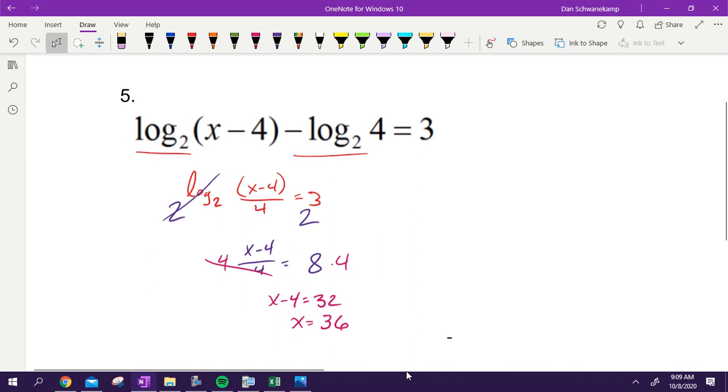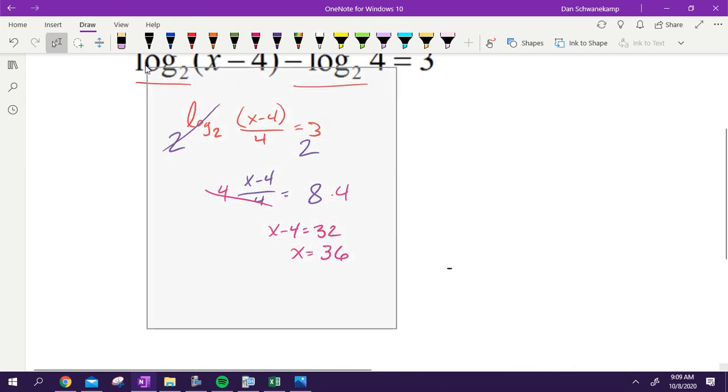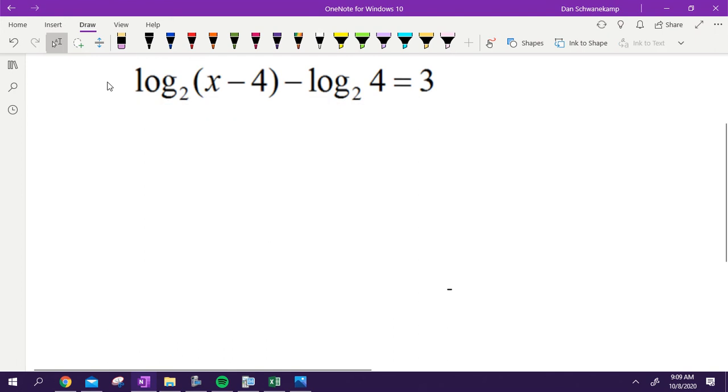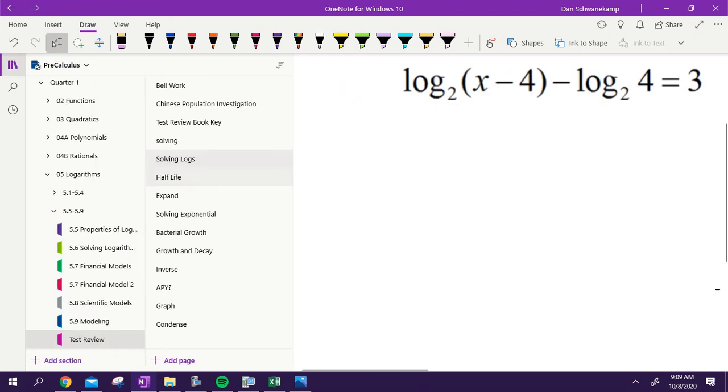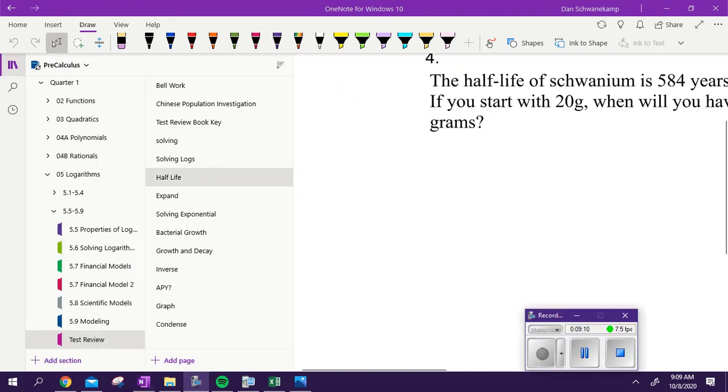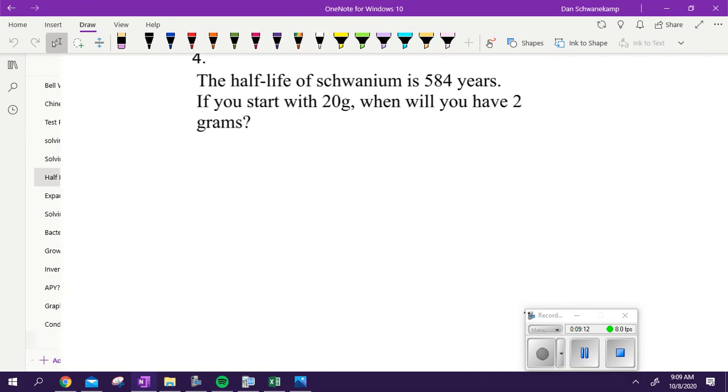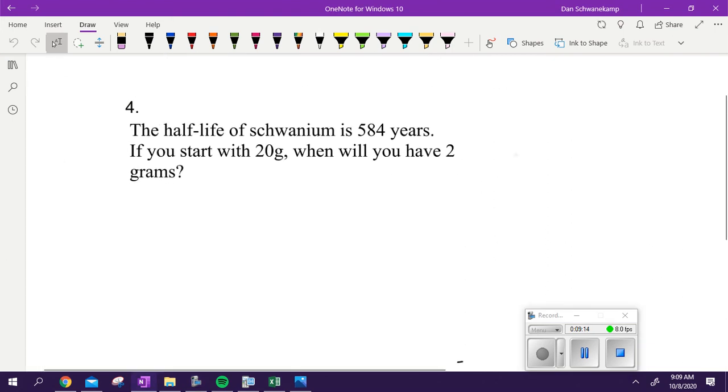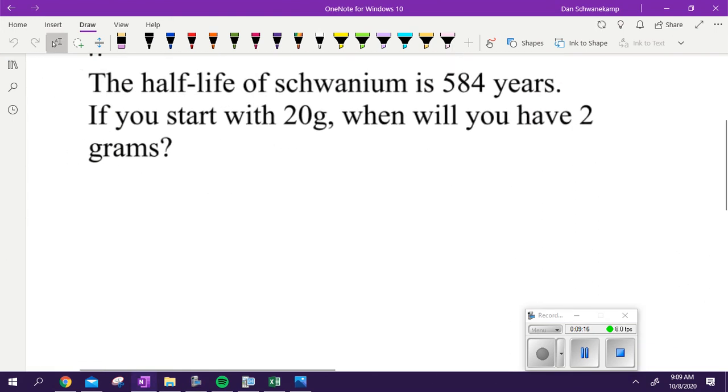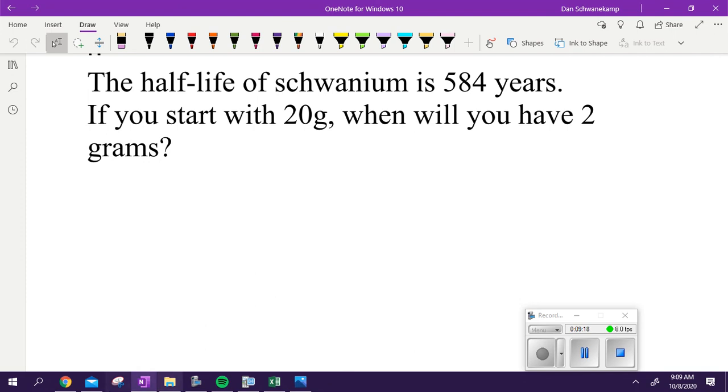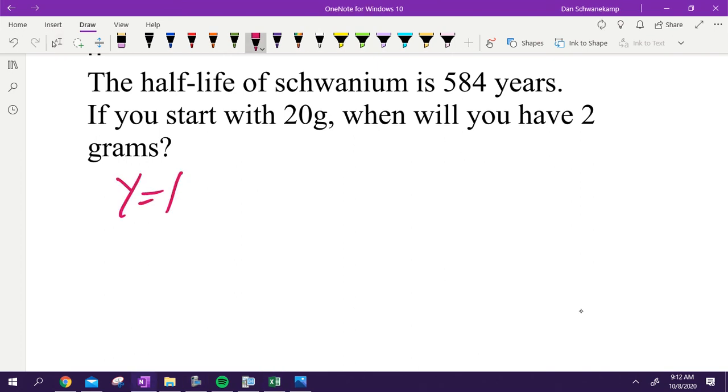Questions there? All right, there we go. Next one. Half-life of Schwannium is 584 years. If you start with 20 grams, when will you have two grams? Here we go. Around there, half-life of Schwannium. So as soon as you see half-life, you're doing Y equals A e^(kt). Two times.